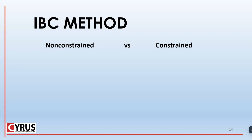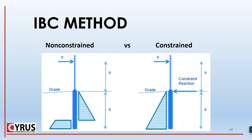There are two methods explained: one for non-constrained and one for constrained foundations. The difference is whether we have a constraint at the ground level — such as a concrete pavement or a rigid floor — or whether we don't have anything. As you can see, the distribution of soil stress is very different for these two cases.